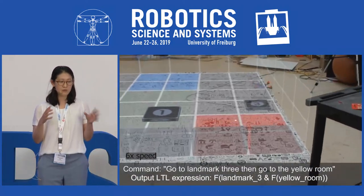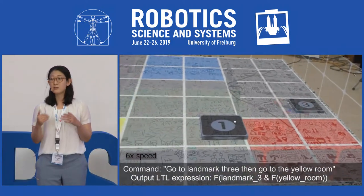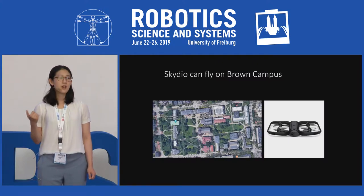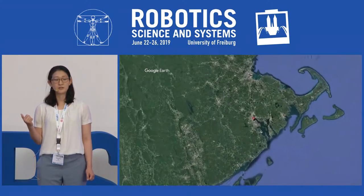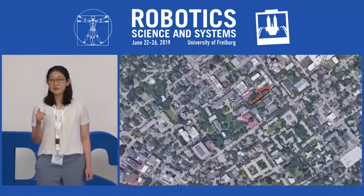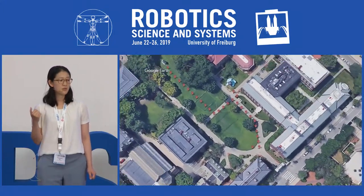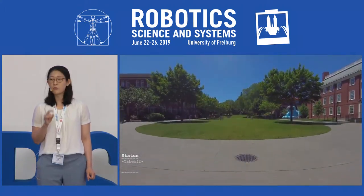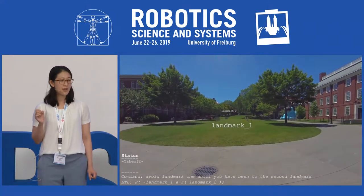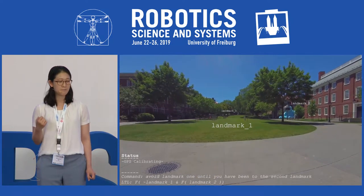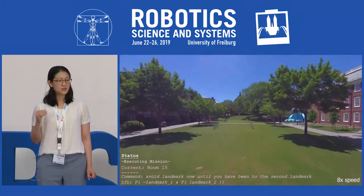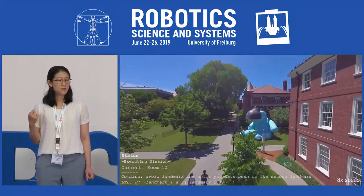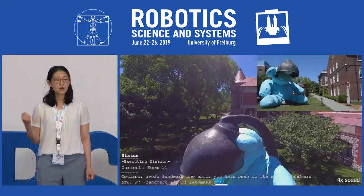However, the space of this problem is quite limited because of the stability of the drone. So we chose another drone which is more stable in outdoor space. The drone flies on the Brown campus. We start at the front of the green, where the green corresponds to landmark 1, and the blue bear corresponds to landmark 2. We give a natural language command 'avoid landmark 1 until you have been to the second landmark,' and then it flies to the blue bear through the sidewalk to avoid the green. After it reaches the blue bear, we give another language command to go to landmark 3.